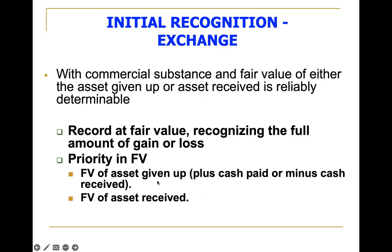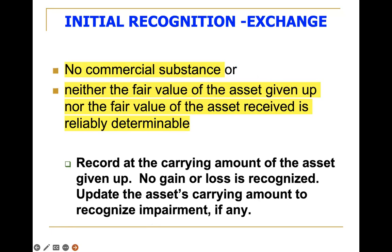What priority in fair value shall we use? Give first priority to the fair value of the asset given up. There may be cash paid if the asset to be received has a fair value more than the asset given up, or you may receive cash if the fair value of the asset given up is more than the asset received. If the fair value of the asset given up is not determinable, use the fair value of the asset received. If there is no commercial substance, record the asset received at the carrying amount of the asset given up — plus cash paid or minus cash received — and no gain or loss is recognized.